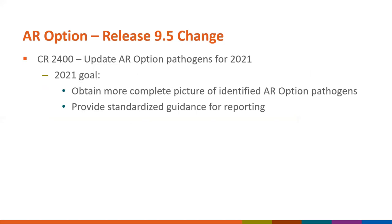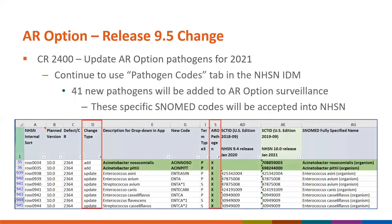One large change we're making for the AR option for 2021 is related to our pathogens. Our goal for 2021 is to obtain a more complete picture of the pathogens that are identified within our AR option protocol and to provide more standardized guidance for reporting. We will continue to use the pathogen codes tab in the IDM and will be adding 41 new pathogens to the ARO pathogen column, noted by an X added to the column in green. These specific SNOMED codes will be accepted into NHSN.